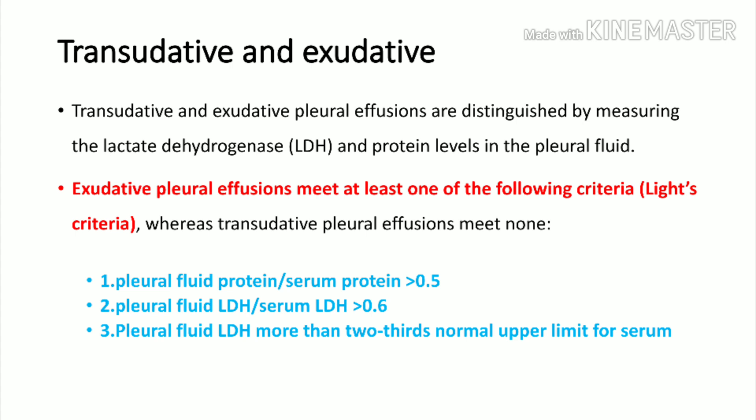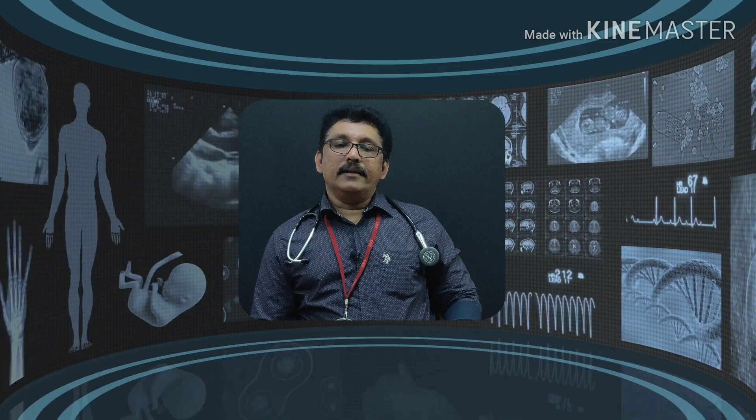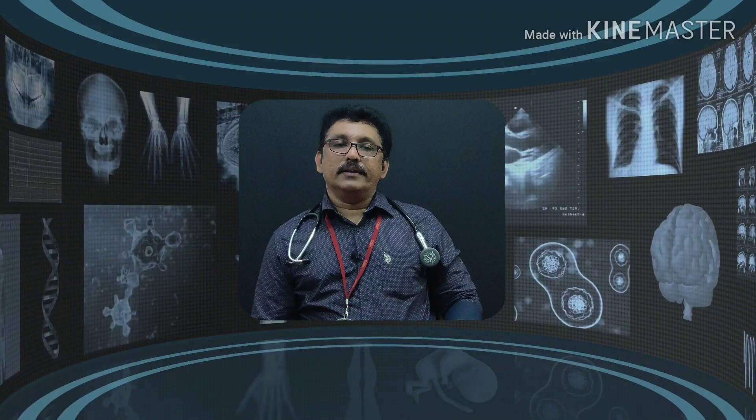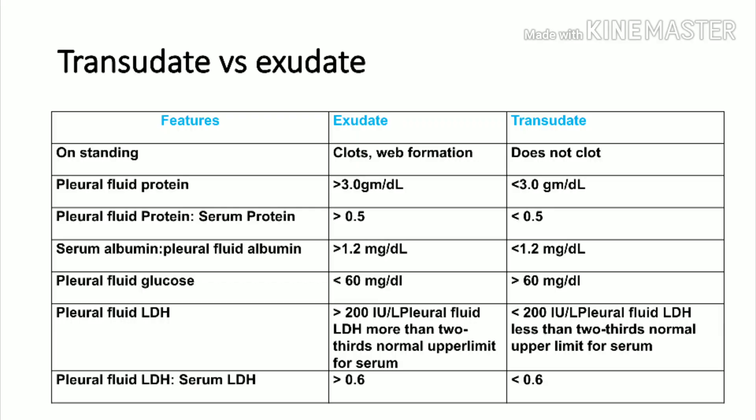There are two types of pleural fluid: transudative and exudative. Transudative means no inflammation; exudative means there is inflammation. Light's criteria defines exudative effusion: at least one of the following must be met — pleural fluid protein to serum protein ratio more than 0.5; pleural fluid LDH to serum LDH ratio more than 0.6; or pleural fluid LDH more than two-thirds of the upper normal limit of serum LDH.